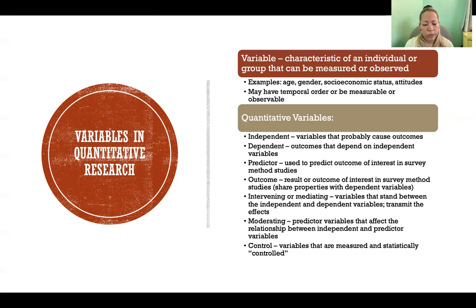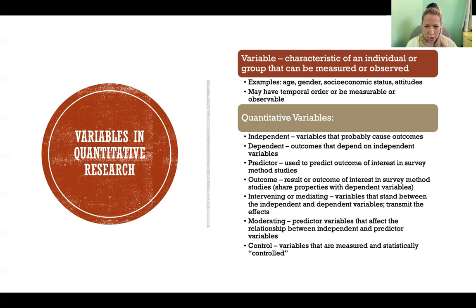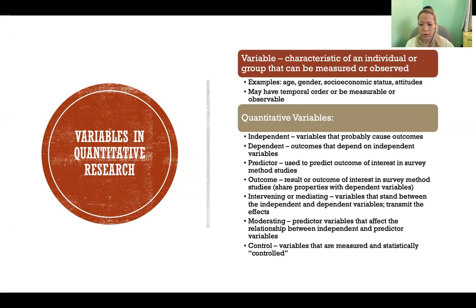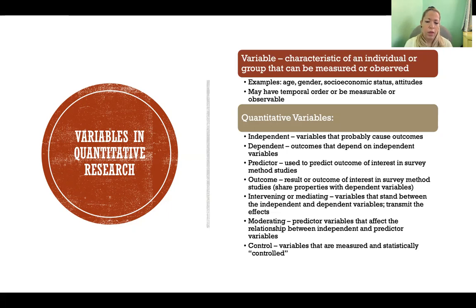Variables can have a temporal order — they can be ordered in a timeframe — and they can be measurable or observable. In quantitative research we have lots of different types of variables. The independent variable is the variable that is probably causing the outcomes, or at least we're hypothesizing that it will. A predictor is used to predict an outcome of interest, like in survey method studies.